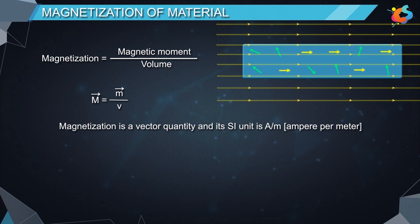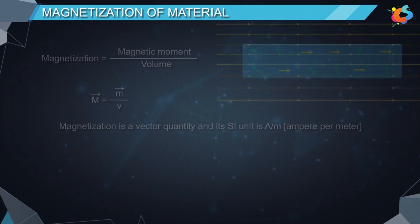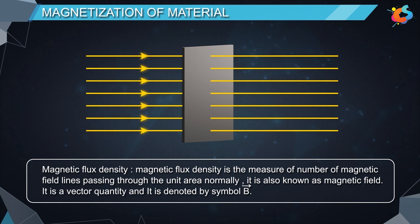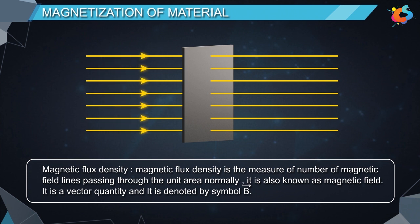Before continuing the topic, let us learn about a few terms. Magnetic flux density is the measure of the number of magnetic field lines passing through unit area normally. It is also known as magnetic field. It is a vector quantity denoted by the symbol vector B.